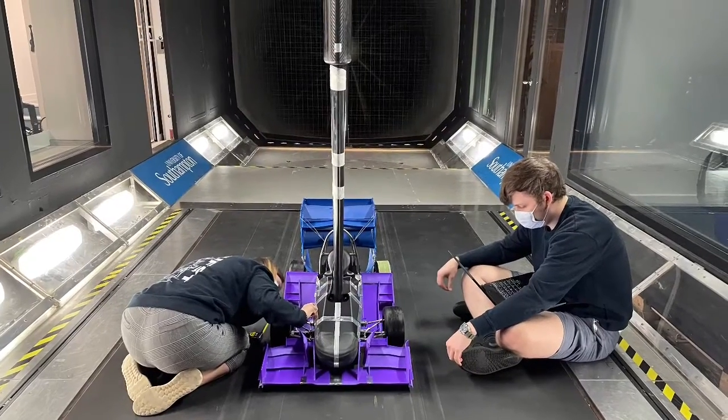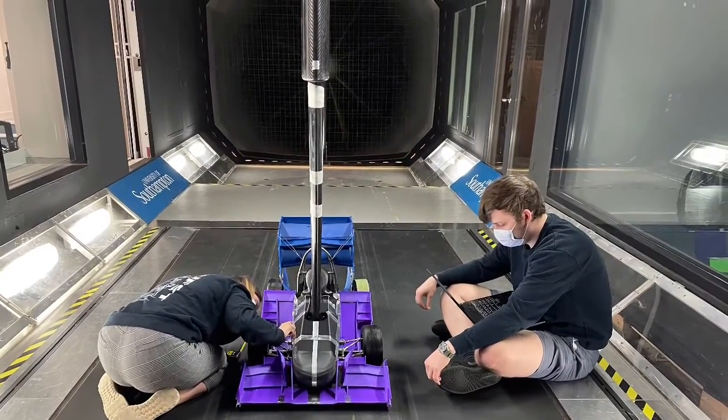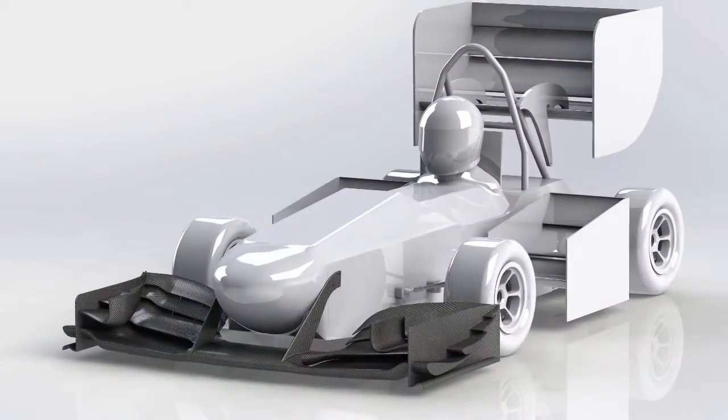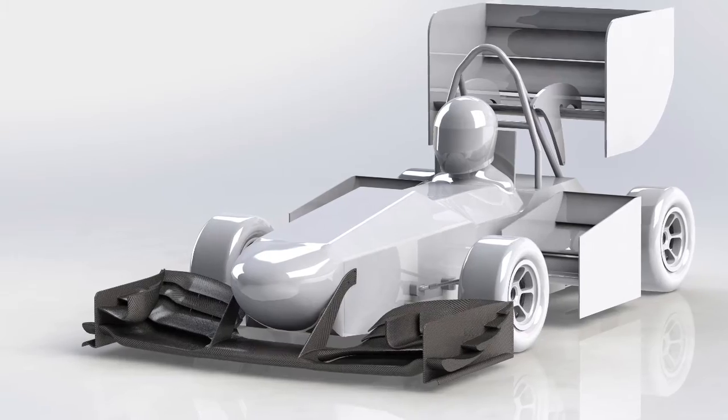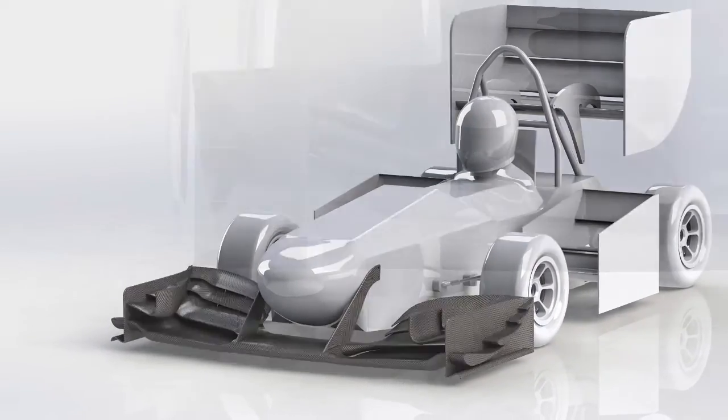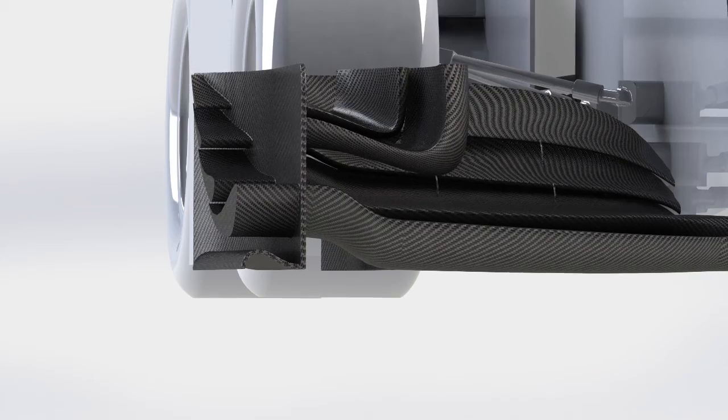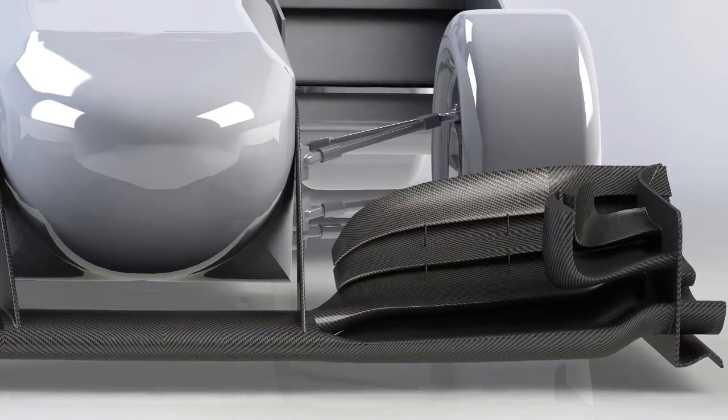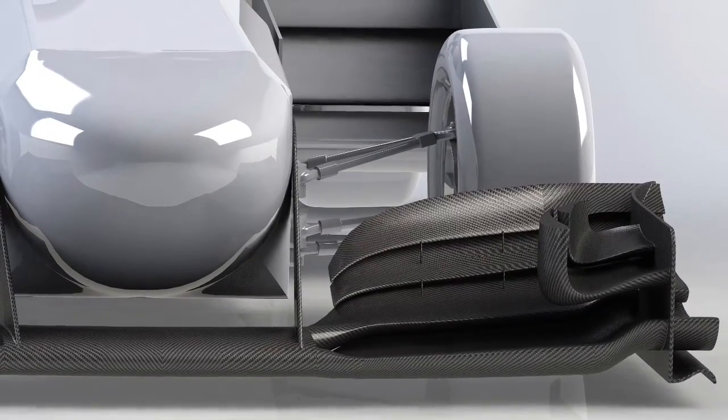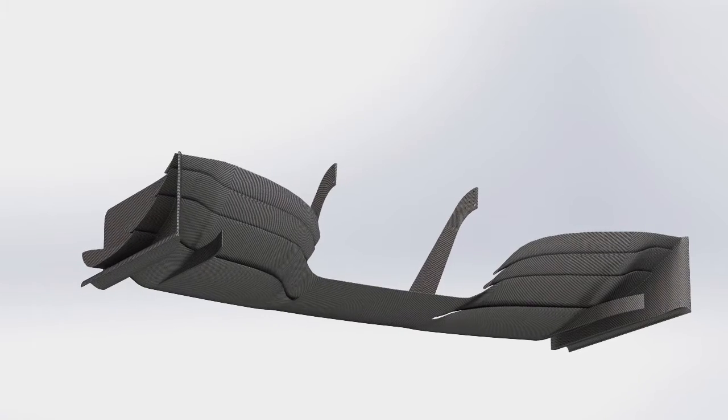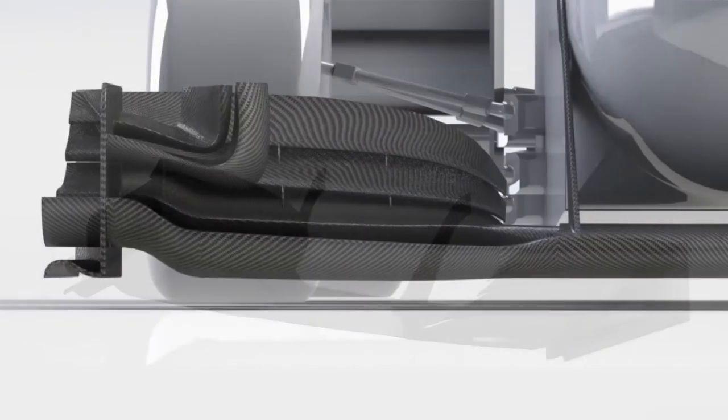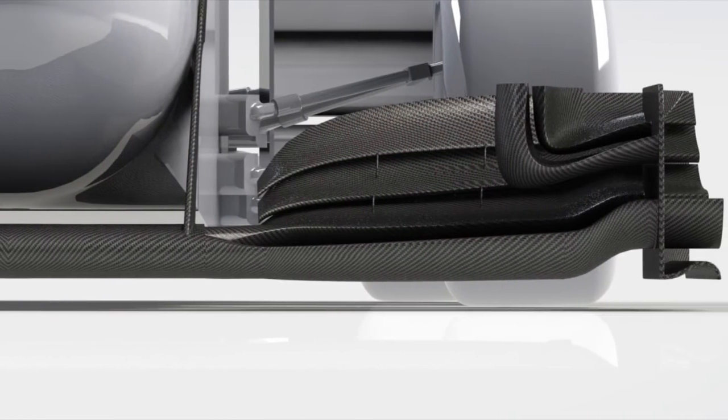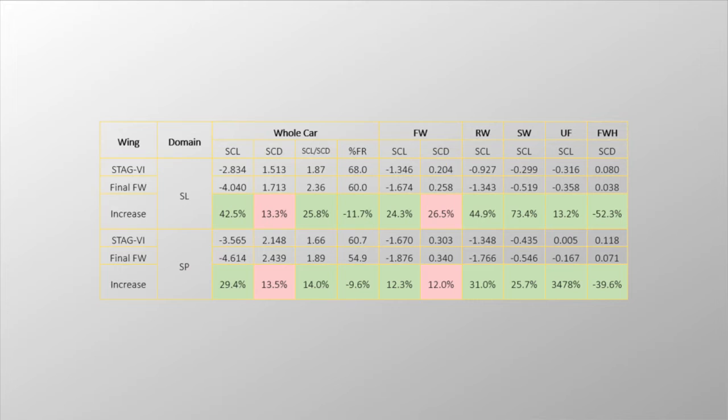The last part of the design process is to appropriate the design for testing which means implementing mechanical mounts to allow it to be mounted to the wind tunnel model. The final wing from this project provided a 42% increase in downforce at a cost of a 13% increase in drag resulting in a 26% increase in overall aerodynamic efficiency. Furthermore, the aerodynamic balance was brought rearward from 68% to 60% within the target range. This in a skid pad domain is a 29% increase in downforce and a 14% increase in overall aerodynamic efficiency.